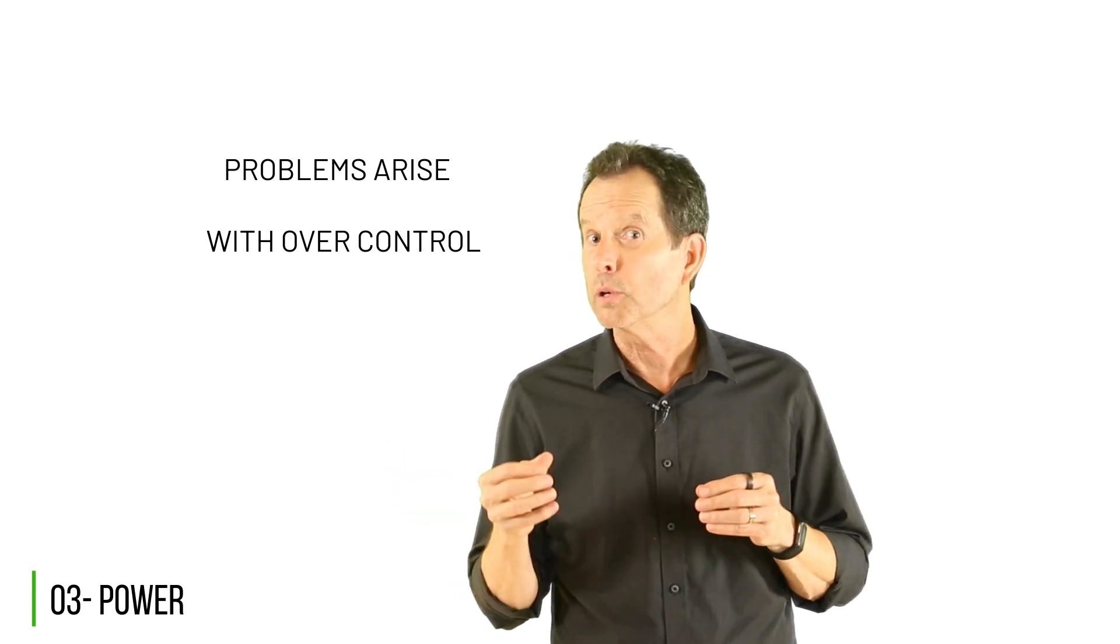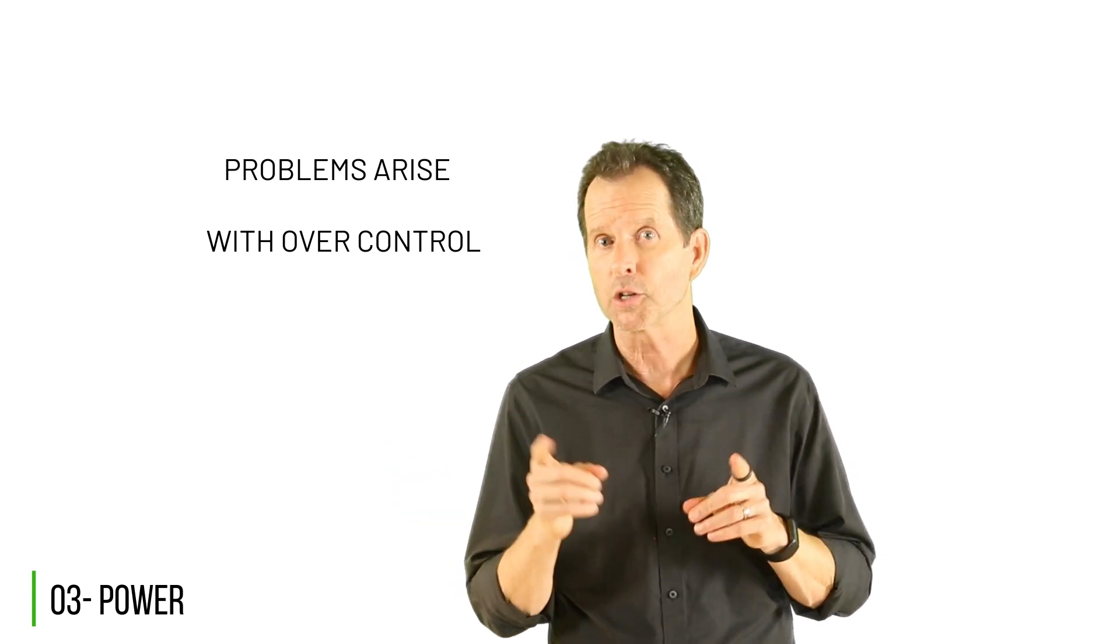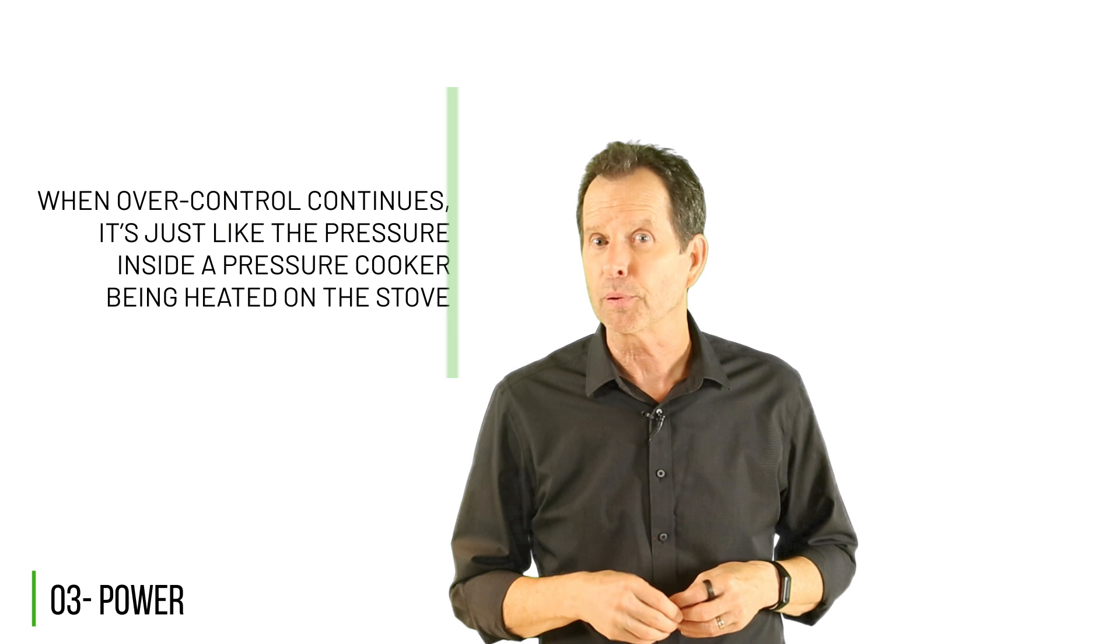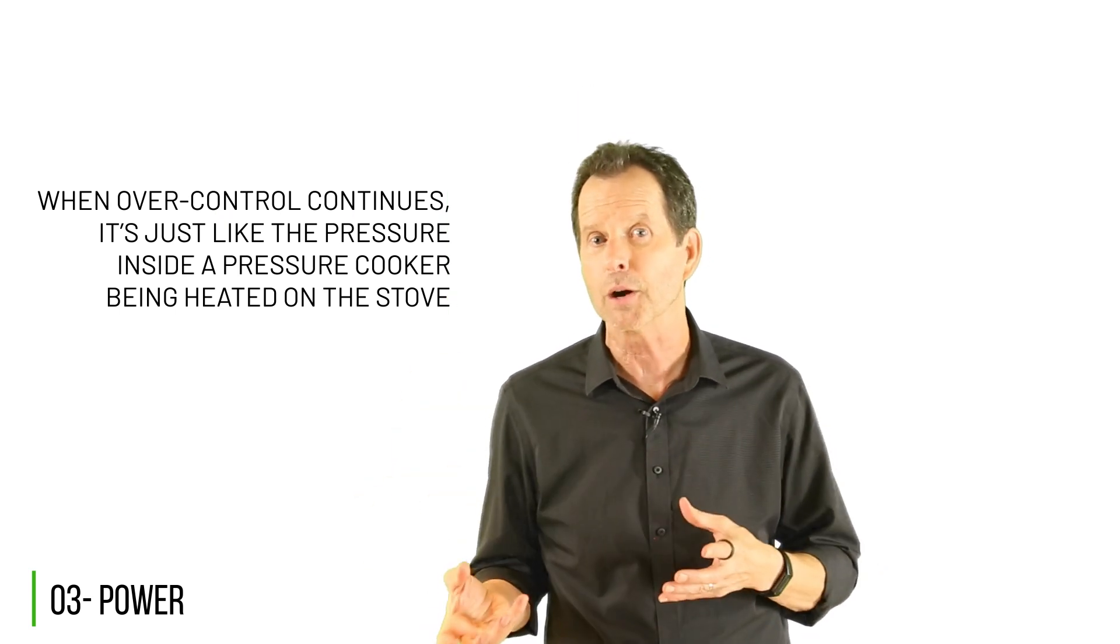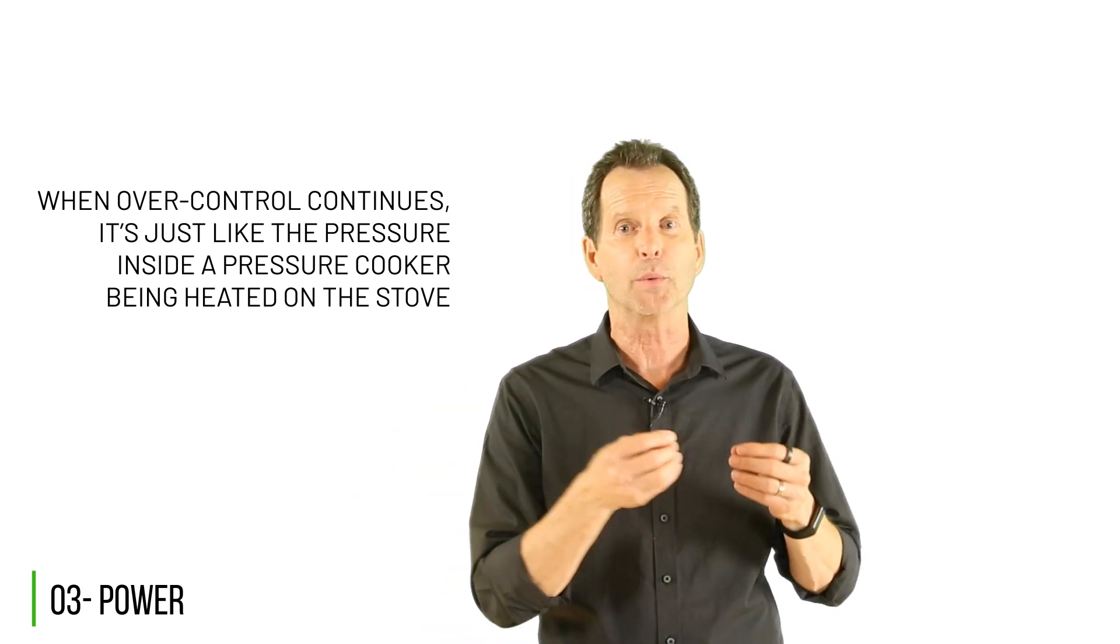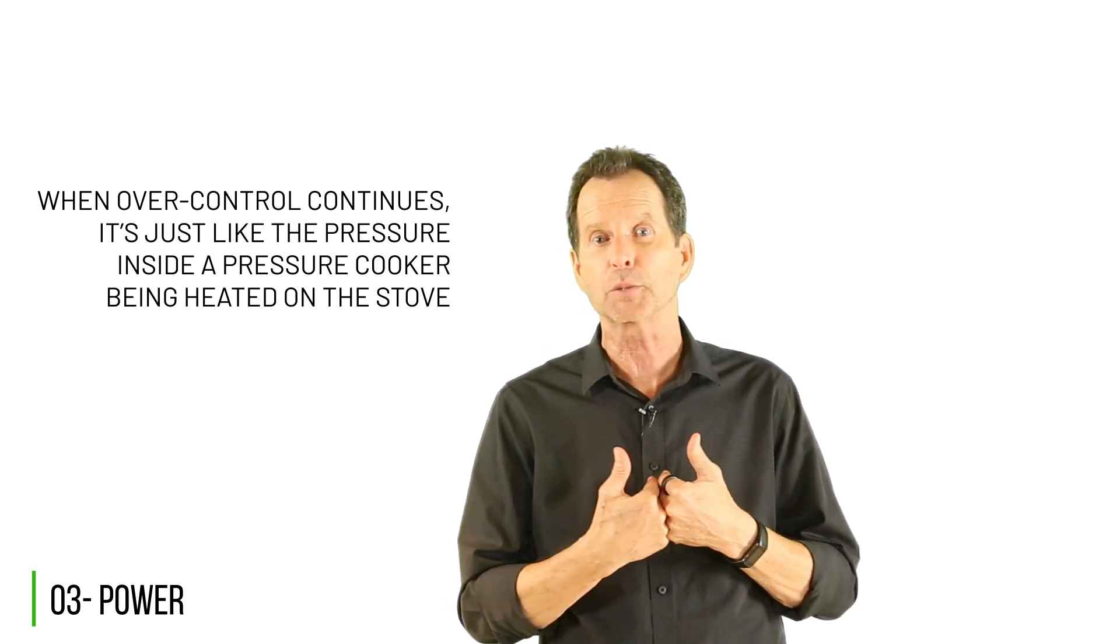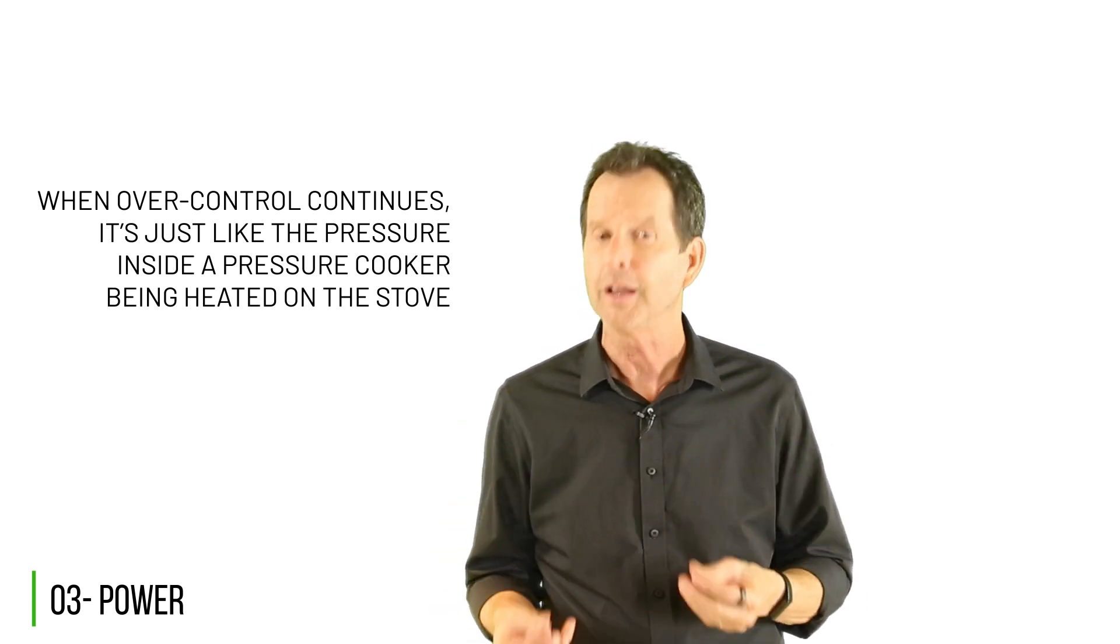When people begin to feel pushed and shoved, their self-control gets tested and tends to diminish. A natural response is to resist, to push back, to rebel. When over-control is allowed to continue, it's just like the pressure inside of a pressure cooker being heated on the stove. Feelings of resentment and their resulting behaviors tend to accumulate and multiply until, at some point, the relief valve lifts. Such was the case with Betsy in the story I told you earlier, and the resulting heartbreak and downward spiral of relationships within her family.